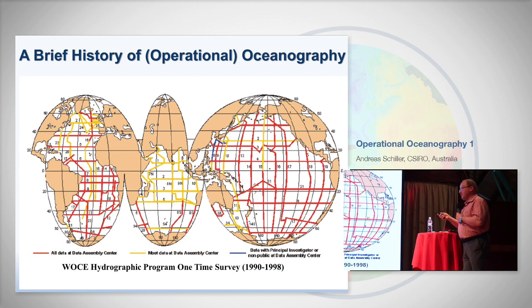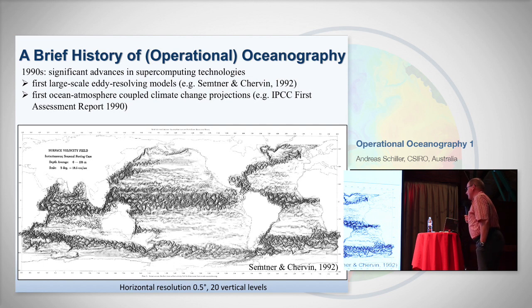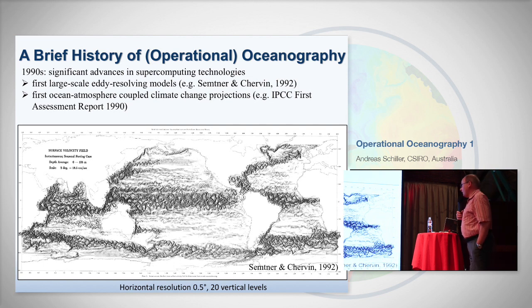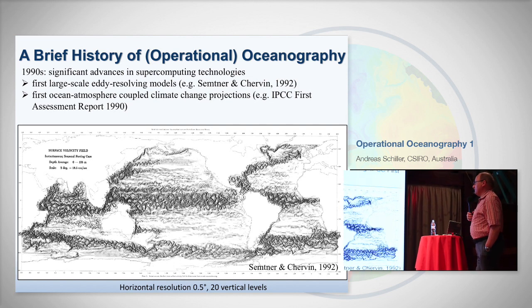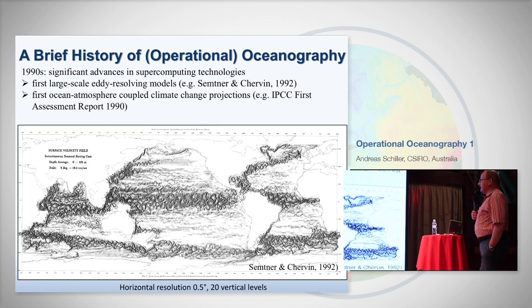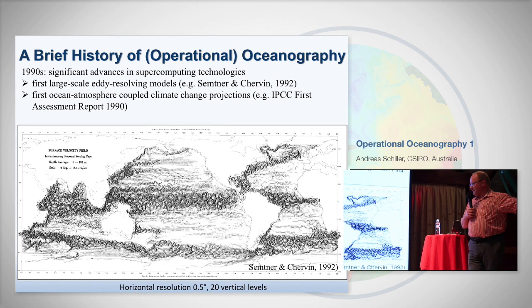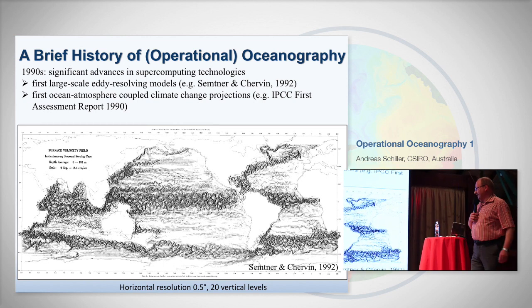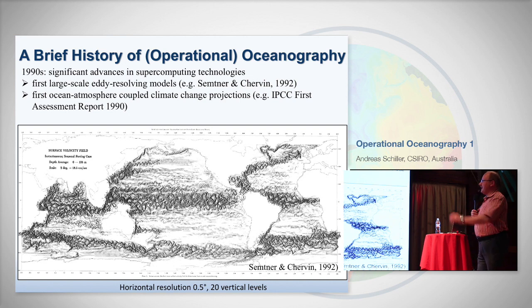That was in the 90s — state-of-the-art at the time. There was no Argo. Then what was hailed as a breakthrough in modeling: the first eddy-permitting simulations on a global scale. This was a half-degree global model with 20 vertical levels. We're all laughing about this today in terms of computing power, but that was state-of-the-art in the early 90s. I should also mention that ocean-atmosphere coupled models were used in the early 90s for the first IPCC assessment report.